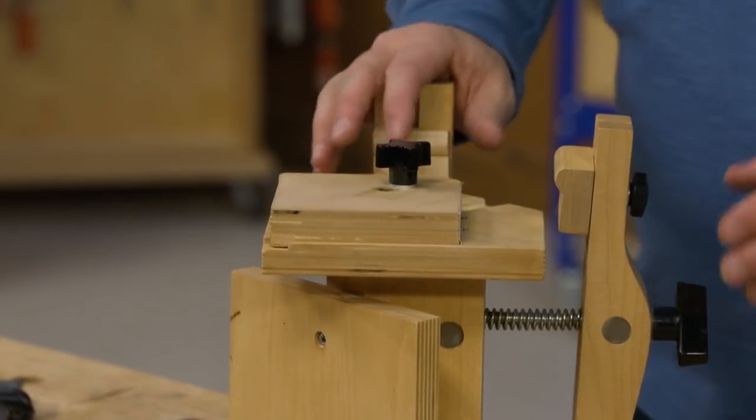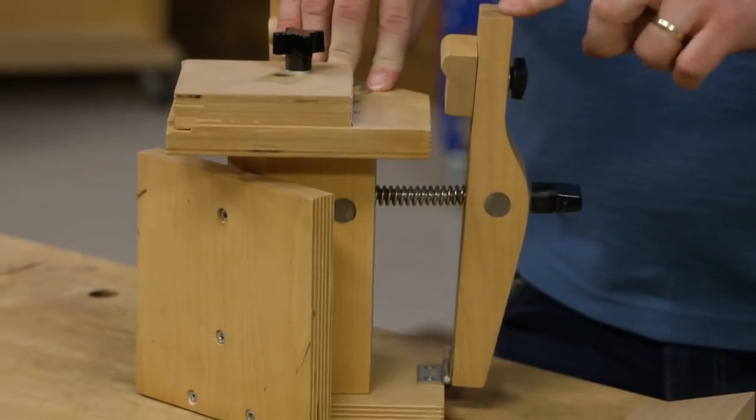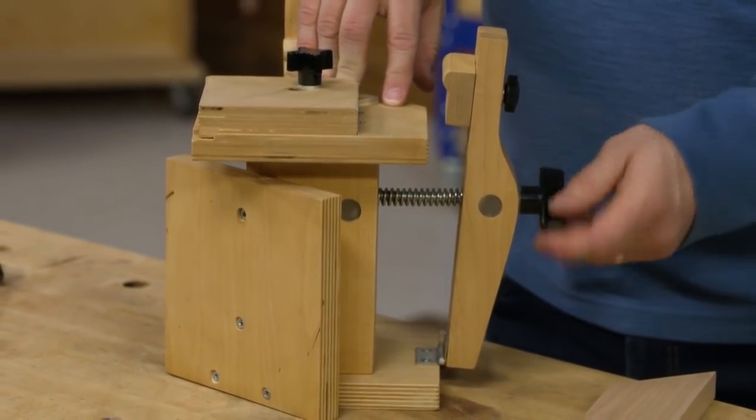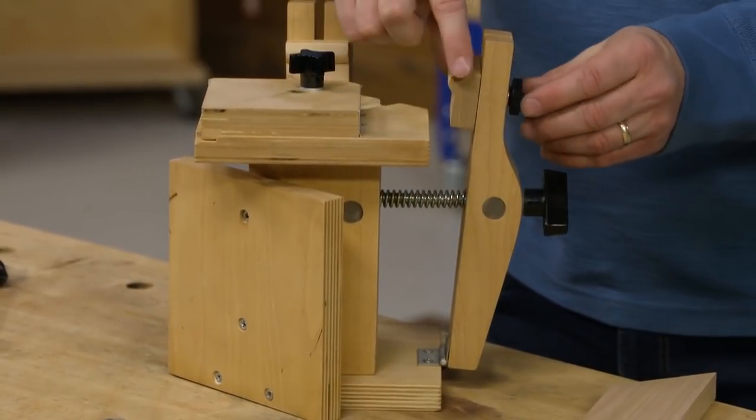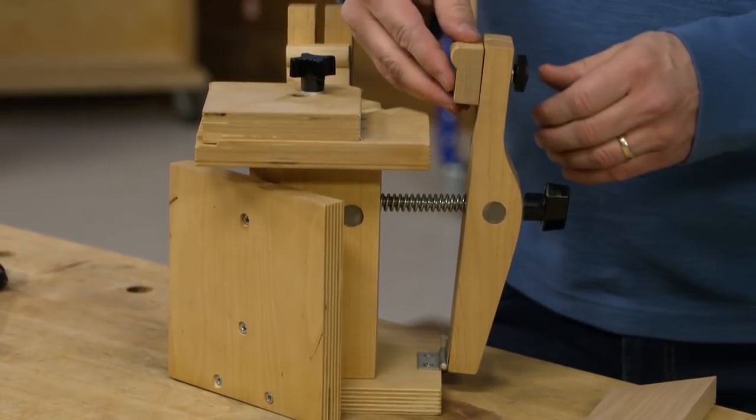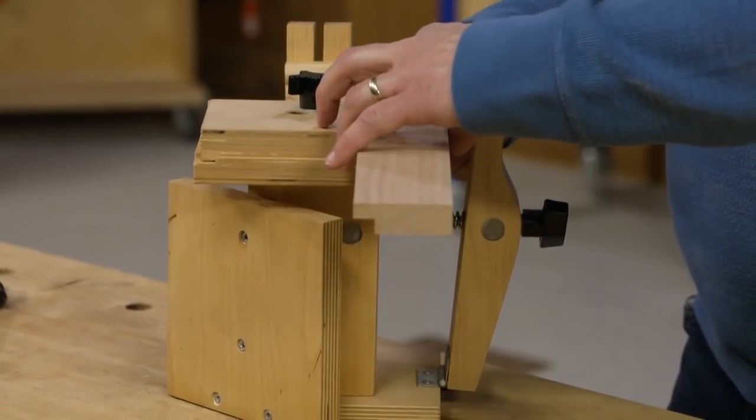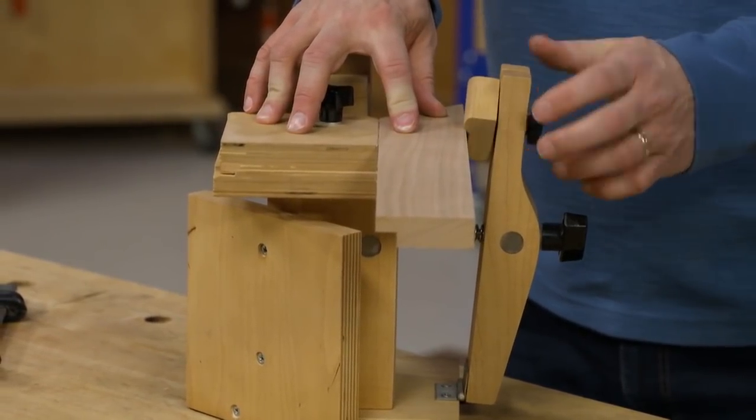The other end of the clamping are these spring-loaded clamping jaws. They're controlled by knobs and threaded rod and some springs here, and then there are these adjustable vise faces or jaws on here.